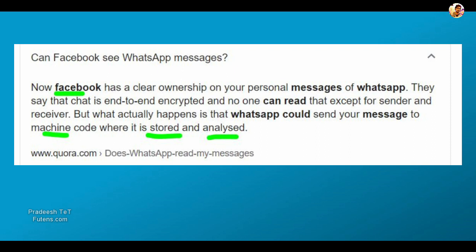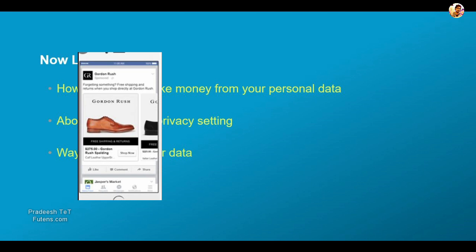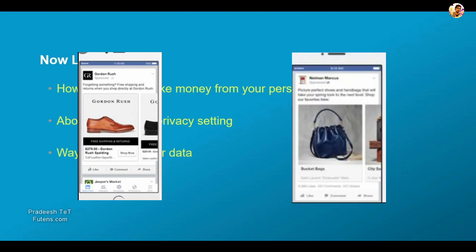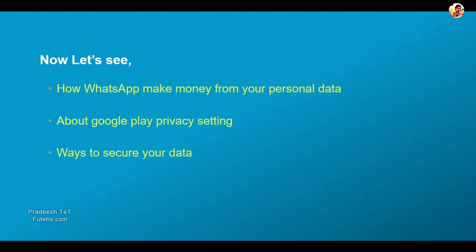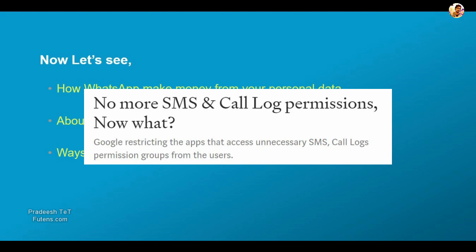So you can analyze it. You can talk about it. You can also add Facebook, Instagram, or WhatsApp. And Google — you can revoke it. You can create SMS permission.